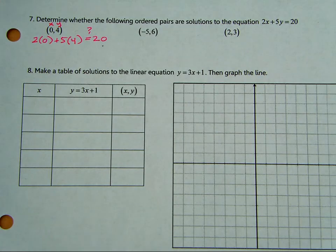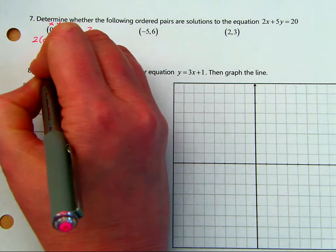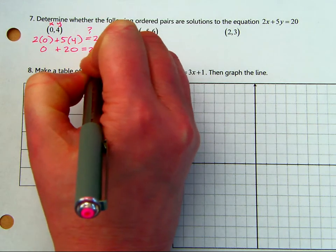Equals 20. And it's a question, so I have the question mark. 2 times 0 plus 5 times 4, is that equal to 20? And that's our question. All right, this is 0 plus 20 equals 20.